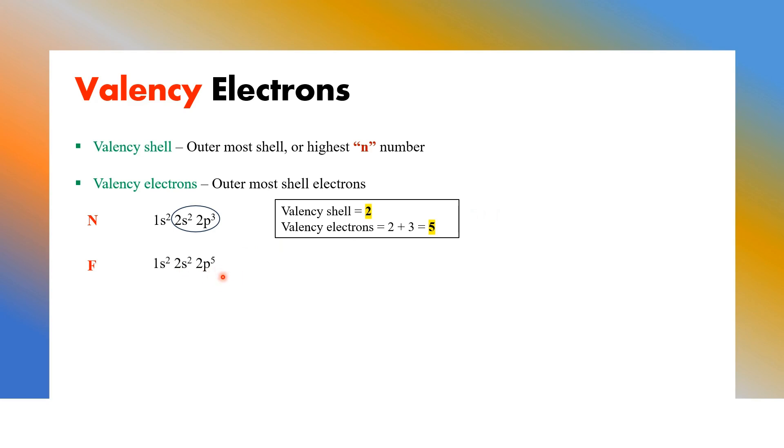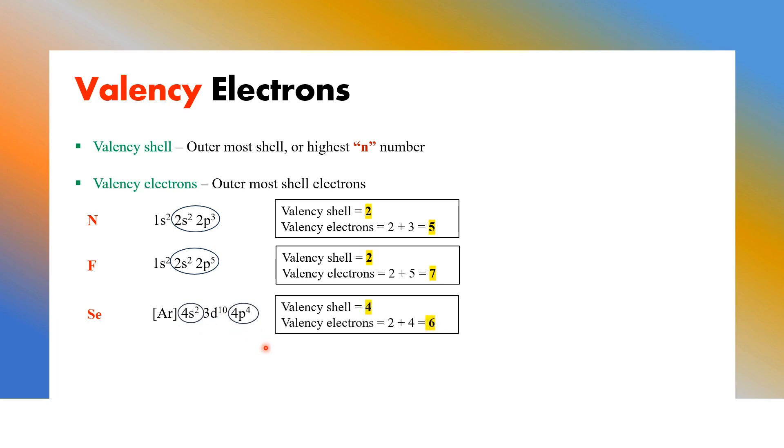Fluorine 1s2, 2s2, 2p5. Again shell number 2 is our valency shell. Total number of electrons, 2 plus 5 is 7. Selenium, argon 4s2, 3d10, 4p4. You can see shell number 4 and shell number 3. 4 is the bigger number. That is our valency shell. Total number of valency electrons, you need to add together 2 and 4, which is 6. Next, iodine. Krypton 5s2, 4d10, 5p5. So shell number 5 is our valency shell. Total valency electrons, 2 plus 5 is 7.